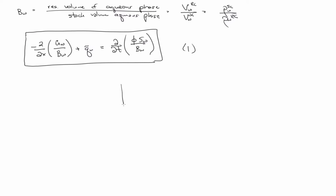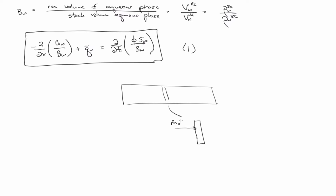I'm not going to go through all the details here, but just a note — if we did the same thing for oil, so if we had our 1D core that we're going to flow oil through, then what we're going to have to write is the mass coming in of the oil in the oleic phase, plus the mass coming in of the volatilized oil in the gaseous phase, because we're writing the mass balance on oil.